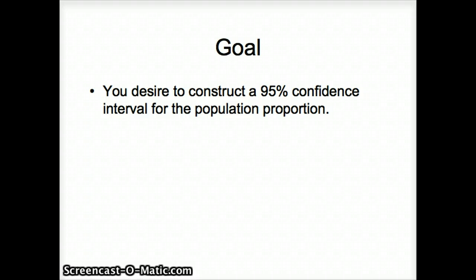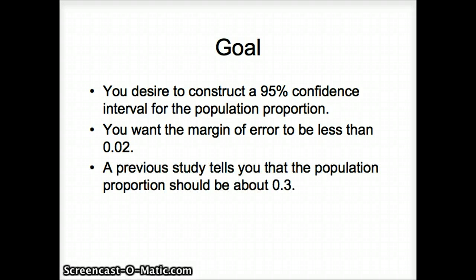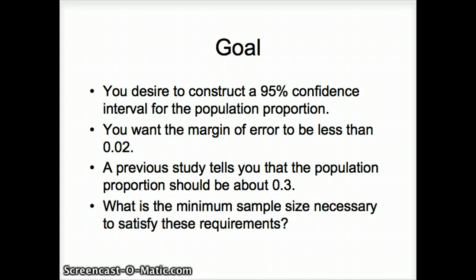Remember we use P to represent the population proportion. We want the margin of error to be 0.02 or less. A previous study tells us that the population proportion should be about 0.3, and we want the minimum sample size necessary to satisfy all these requirements.